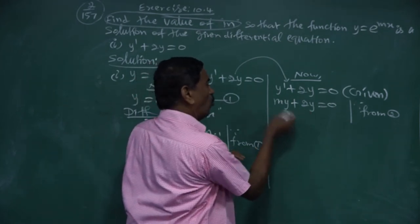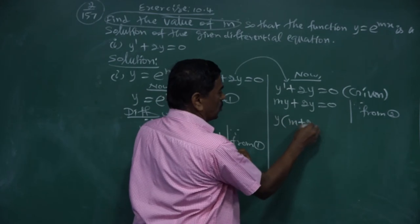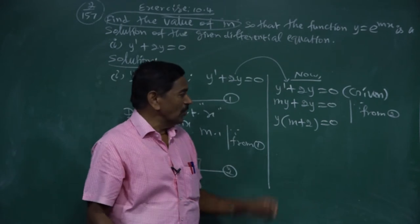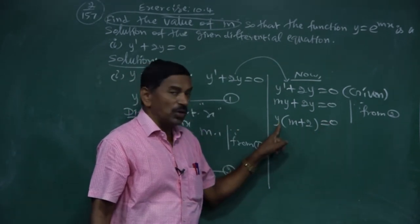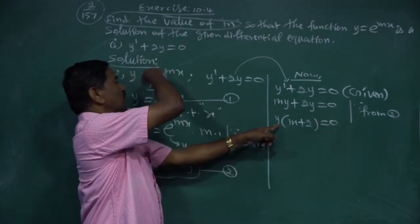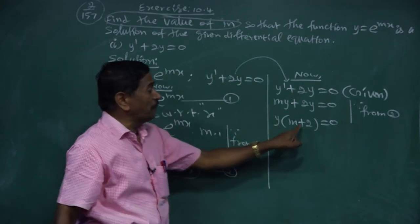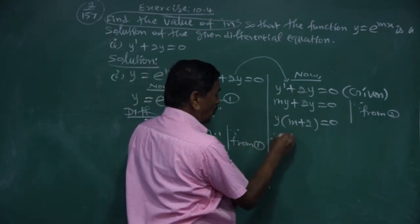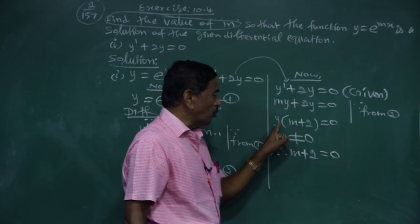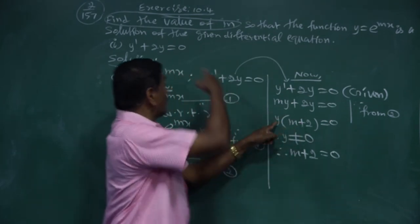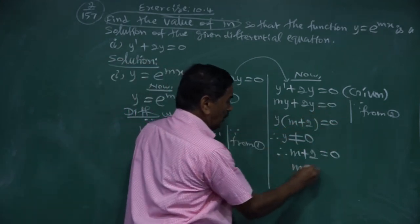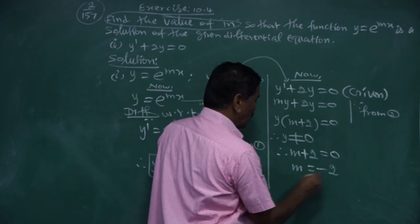Taking y common: y(m + 2) = 0. Since the product equals zero, either y = 0 or m + 2 = 0. But y ≠ 0 because y = e^(mx) is the given function. Therefore m + 2 = 0, giving m = -2.